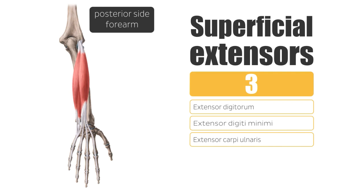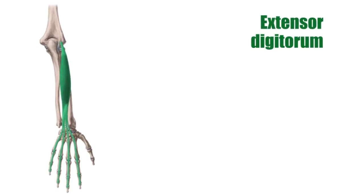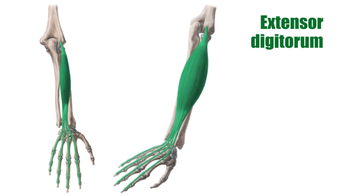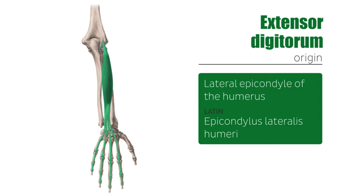Let's start with the first muscle on our list: the extensor digitorum. As the name indicates, it is responsible for extending the medial four digits of the hand. Now let's talk about the origin points of the extensor digitorum — as you can see here, the origin point is right on the lateral epicondyle of the humerus.